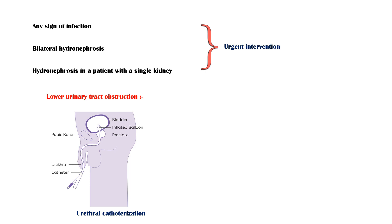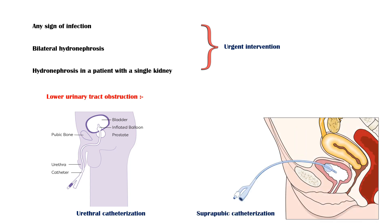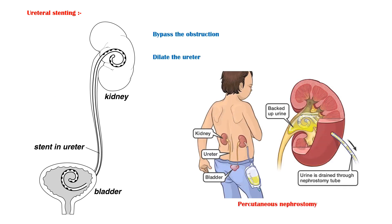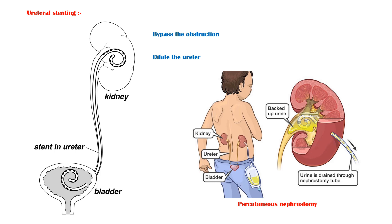It is important to know that the pathology itself may complicate the insertion of a urinary catheter — for example, if there is a urethral stricture, catheterization may be difficult to perform. If urethral catheterization fails, suprapubic catheterization may be indicated. Ureteral stenting is used to bypass the obstruction and dilate the ureter, permitting urinary outflow. If stenting fails, percutaneous nephrostomy may be indicated. All these options provide temporary relief of the obstruction; as the definitive treatment, you should always correct the underlying cause of hydronephrosis.